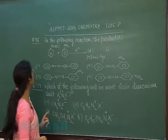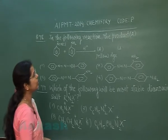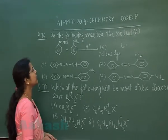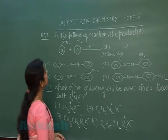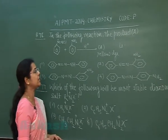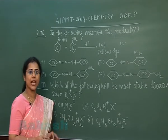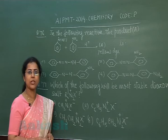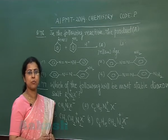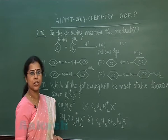Question number 76: In the following reaction, the product A is — the given reaction is the reaction of benzene diazonium chloride with aniline in acidic medium. As we know, benzene diazonium salt gives a coupling reaction with phenol in basic medium and with aniline in acidic medium.